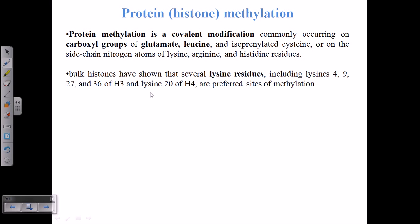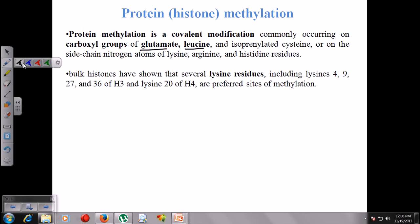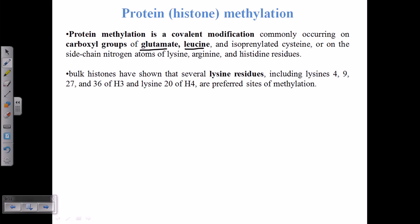In DNA methylation, we have seen that methylation always tends to occur in cytosine as well as adenosine. In the case of protein methylation, they usually methylate the carboxyl group of glutamate, leucine, or isoleucine. Majorly glutamate and leucine at their carboxyl groups, and they can also methylate lysine residues.